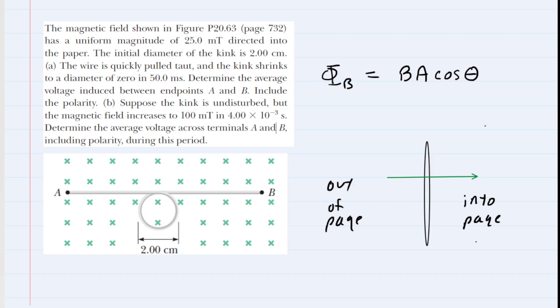We also have another vector called the normal vector. The normal vector is an imaginary vector that goes right through the center of the loop and is perpendicular to the plane of the loop, so this angle would be 90 degrees. The green vector is the magnetic field and the purple vector is the normal vector. Now, what is the angle between those two vectors? Hopefully you would see that the angle is zero degrees, so in this question our angle is zero degrees.